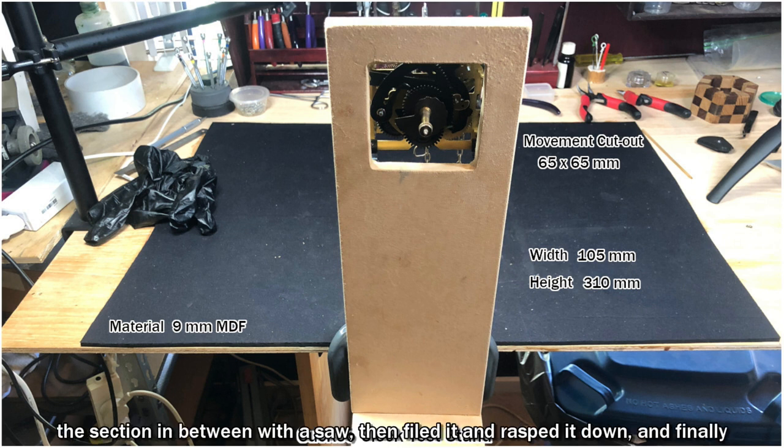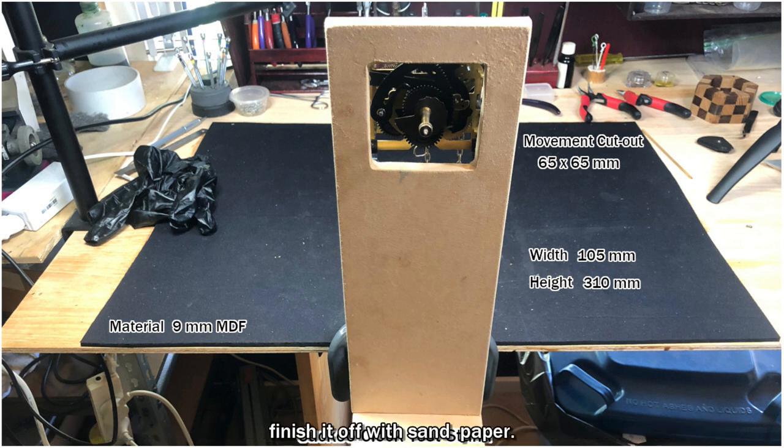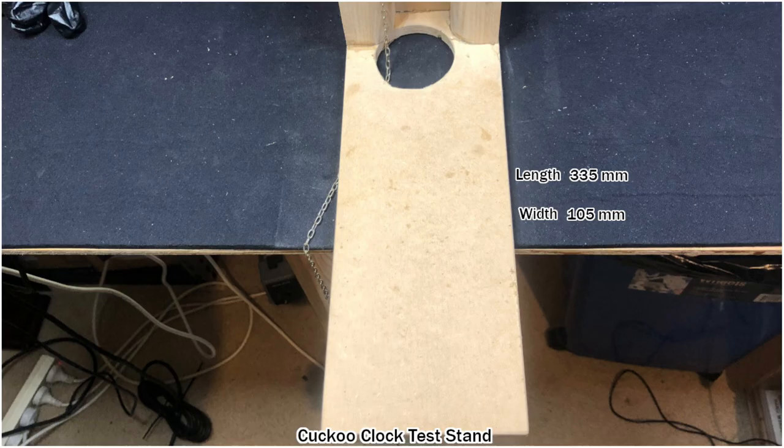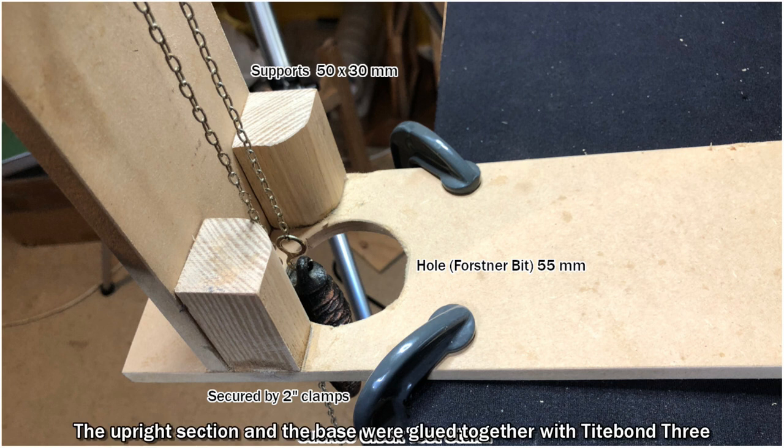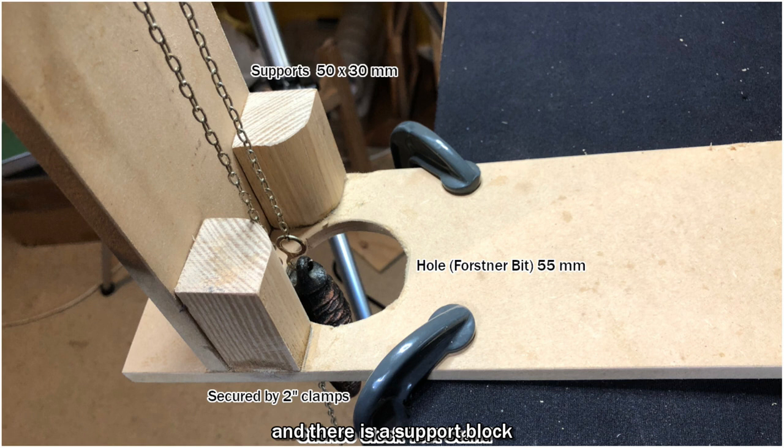The base has a length of 335 millimeters and a width of 105 millimeters. The upright section and the base were glued together with Titebond 3, and there is a support block 50 by 30 millimeters on either side made of hardwood that is also glued to both sections.